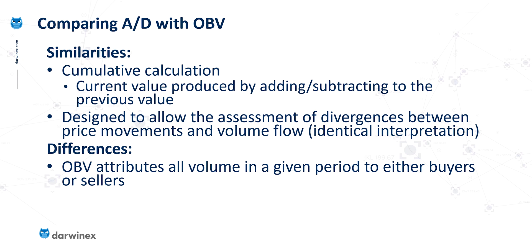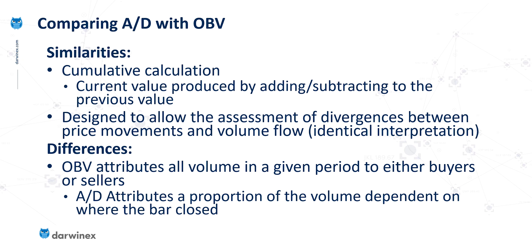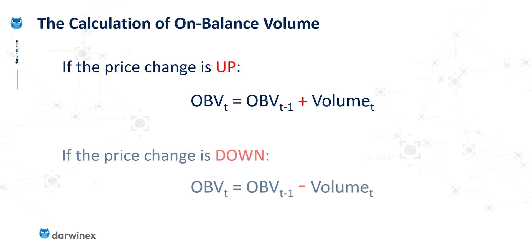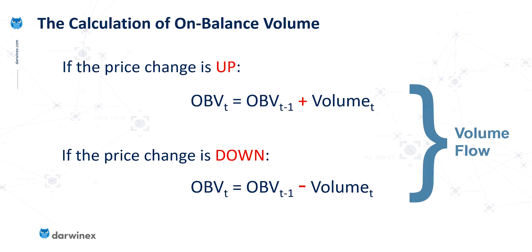With OBV, as we saw last time, this attributes all of the volume in a given bar to either the buyers or the sellers, depending on whether the price bar has gone up or down. And if you think about it, that's not a realistic representation of the actual volume that took place. So accumulation distribution attempts to rectify that by allocating a proportion of the volume depending on the nature of the price bar. With OBV, if the price change was up, it attributed all of the volume to the buyers by adding that on to the cumulative value, and when the price bar goes down, it subtracts it — effectively allocating that volume to the sellers.